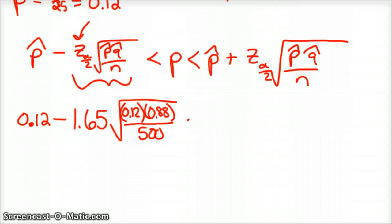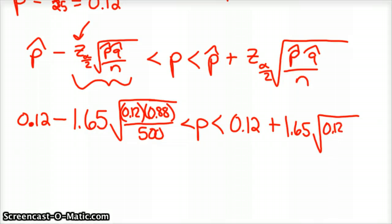So 1.65 times the square root of P hat, which is 0.12 times Q hat, your proportion for females, 0.88 divided by your population 500. Okay, is less than P, and then you just repeat it all again. So 0.12 plus 1.65 times the square root of 0.12 times 0.88, all divided by 500.